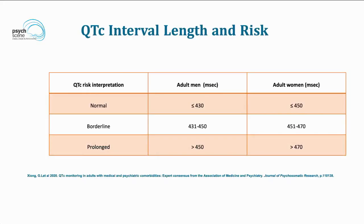What are the values in milliseconds of the QTc interval that we should take into account? The QTc is corrected for heart rate — the C stands for that correction. The normal QTc interval in an adult male is less than or equal to 430 milliseconds; in adult women, less than or equal to 450 milliseconds. A borderline QTc in adult men is 431 to 450, whilst in females it is 451 to 470. A prolonged QTc is considered greater than 450 milliseconds in males and greater than 470 milliseconds in females — that's when we need to think about the associated risks.